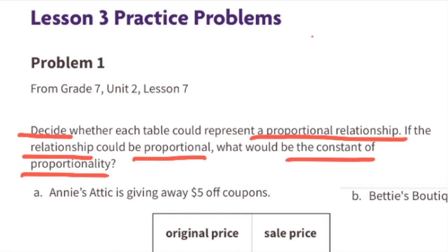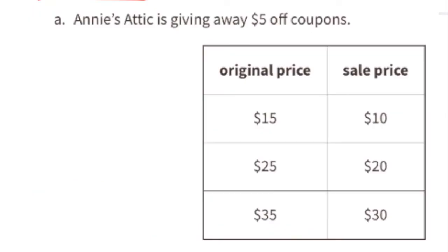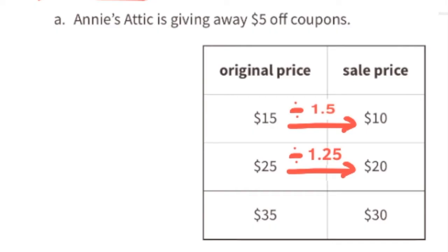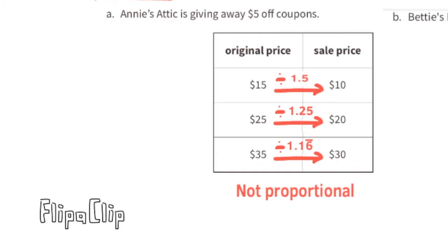Table A: Annie's Attic is giving away five-dollar-off coupons. The original price $15 is 1.5 times larger than the sale price $10. The original price $25 is 1.25 times larger than the sale price $20. The original price $35 is 1.16 repeating times larger than the sale price $30. Table A does not represent a proportional relationship because the original price is not consistently the same number of times larger than the sale price.